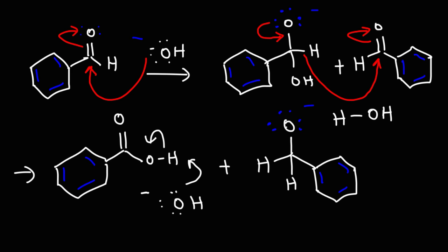And this alkoxide ion can quickly abstract a proton from water, regenerating the hydroxide ion. So the end result is that we're going to get benzoate under these strongly alkaline conditions.